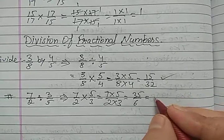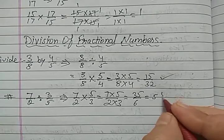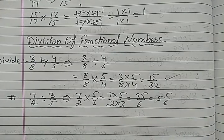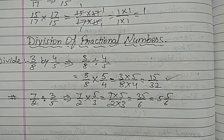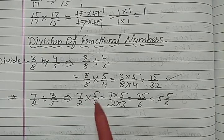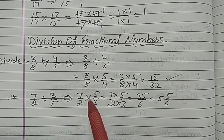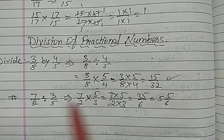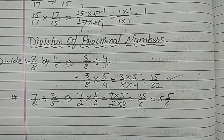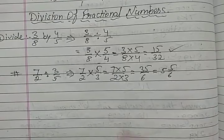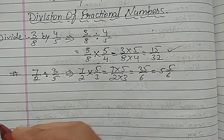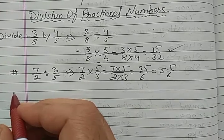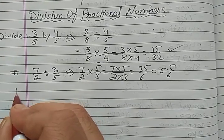35 upon 6 — 6 × 5 is 30, so it becomes 5 and 5 upon 6. This is the answer. I hope this step is clear — how to convert division into multiplication by writing the reciprocal of the divisor. Now we will see how to divide a whole number by a fractional number or a fractional number by a whole number.